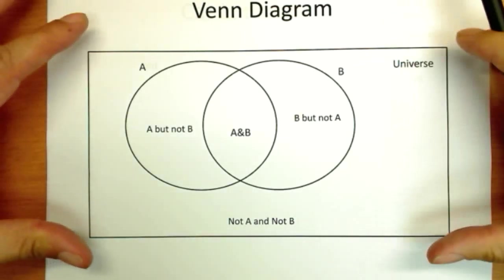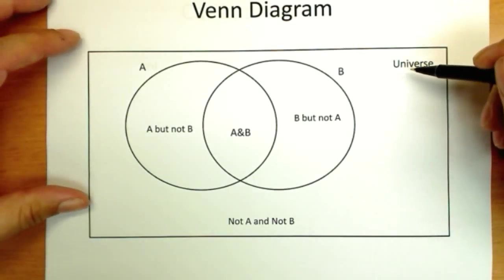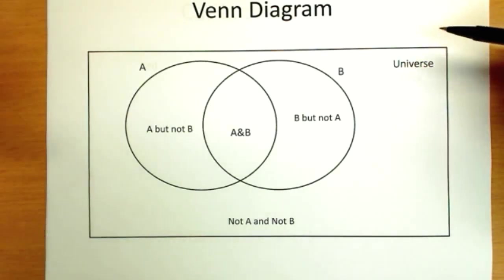We have a box that includes our total universe, which we'll normally name what that universe is. Types of flowers, pets, whatever.